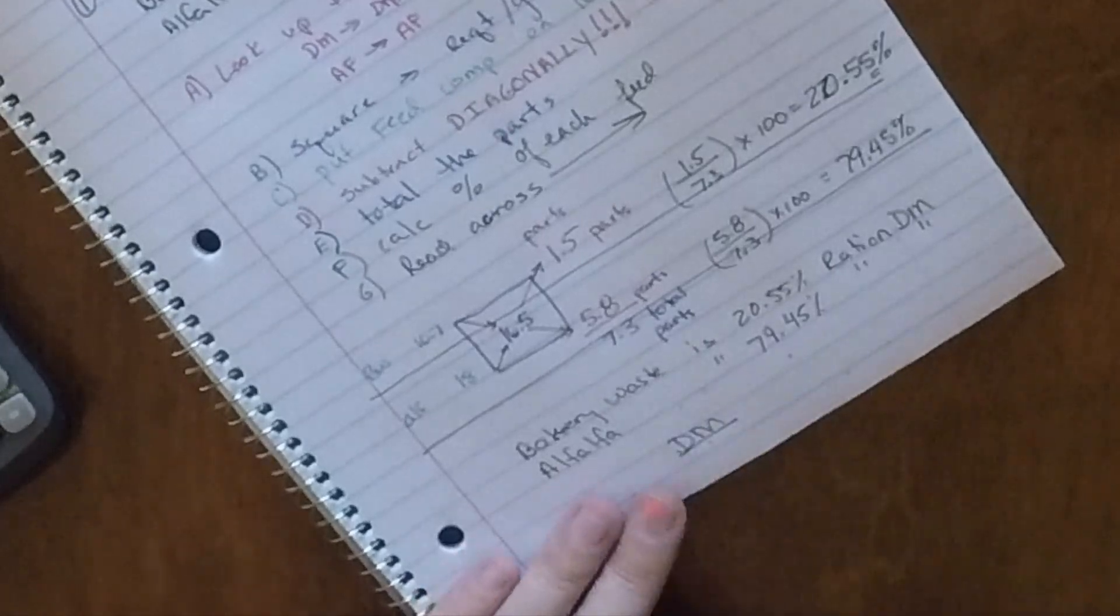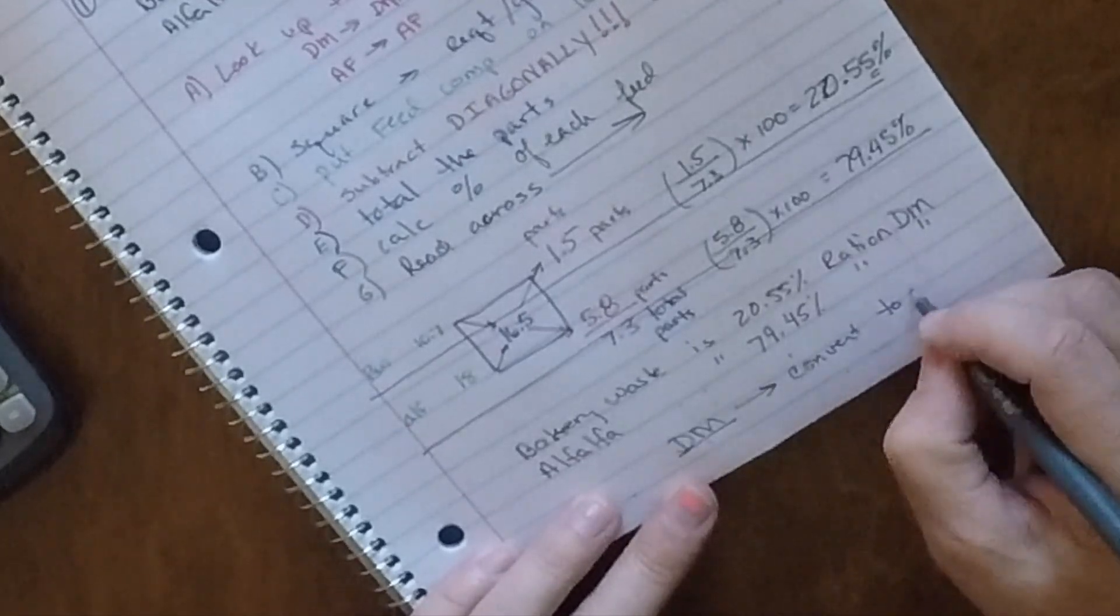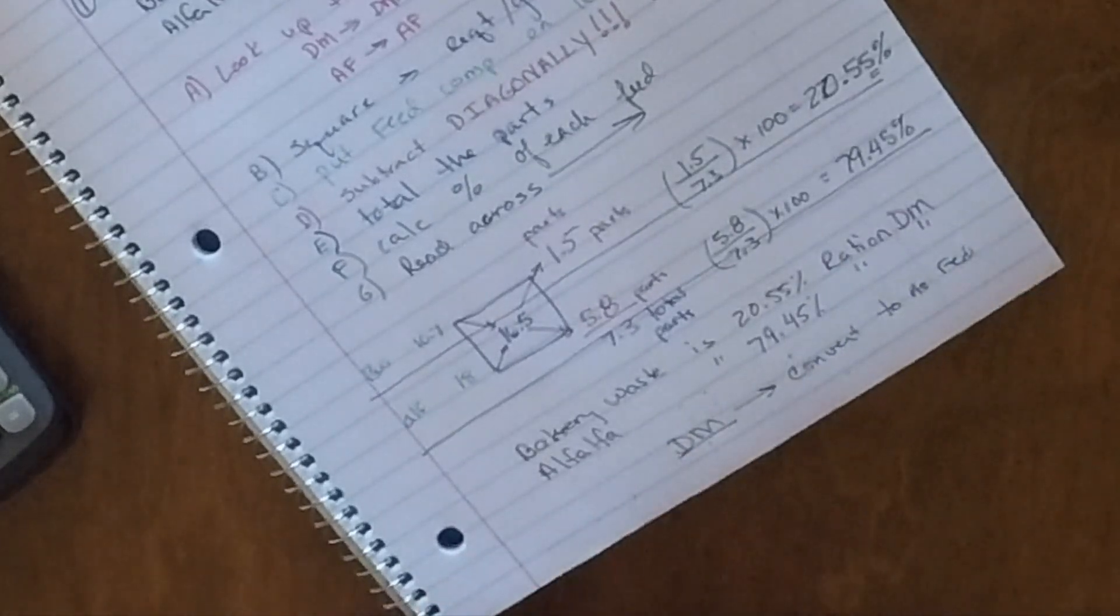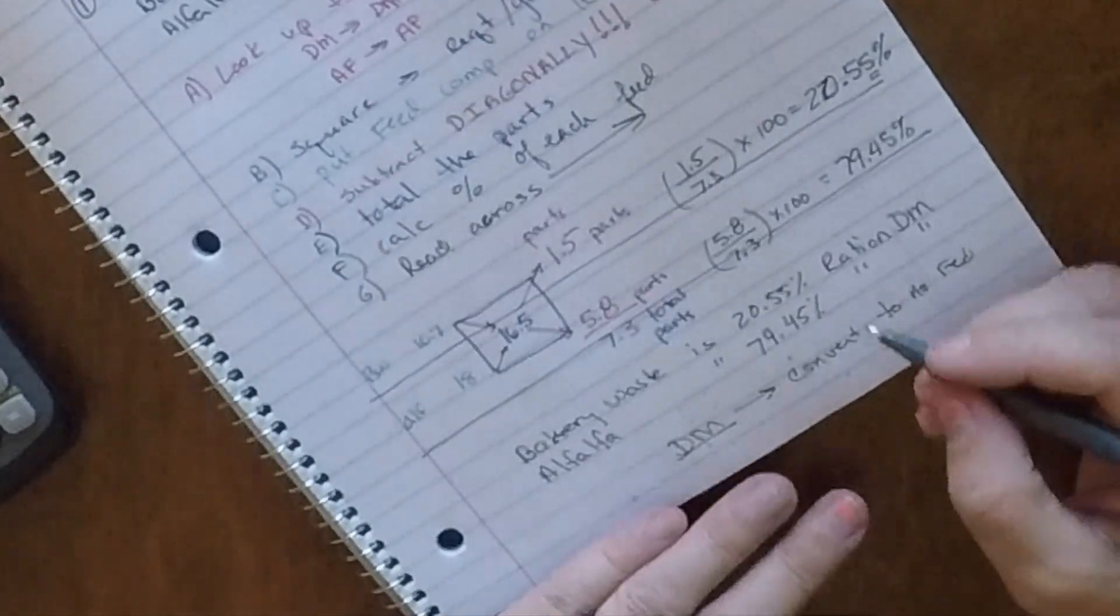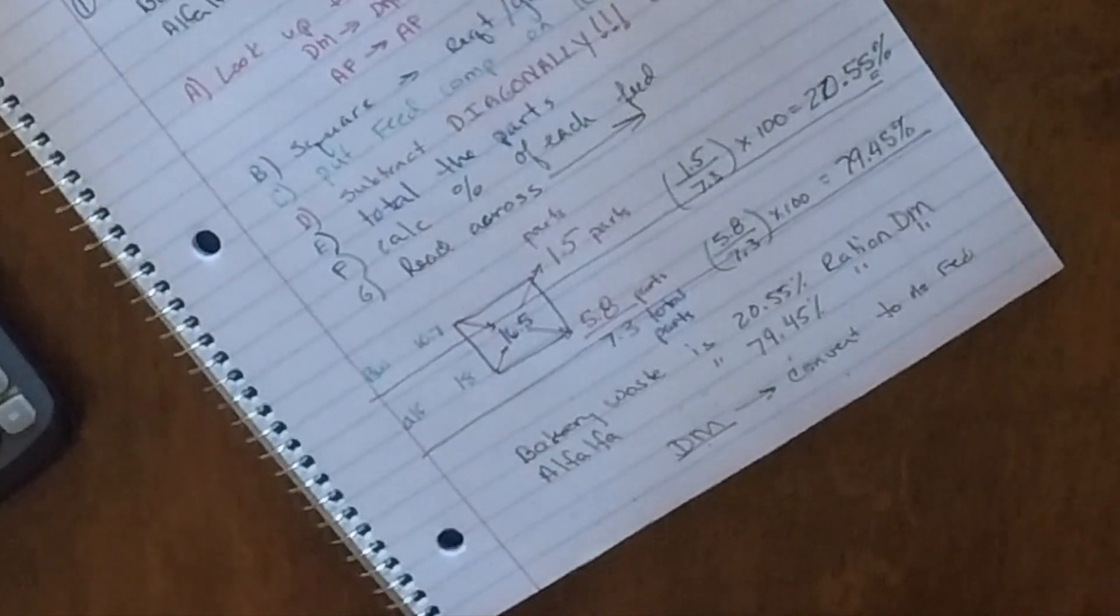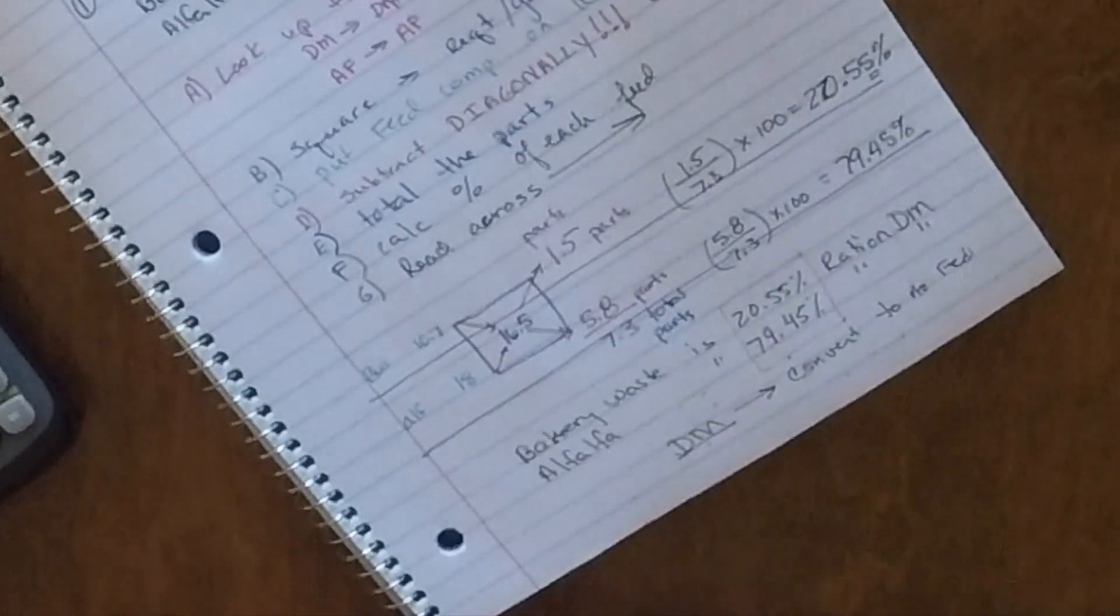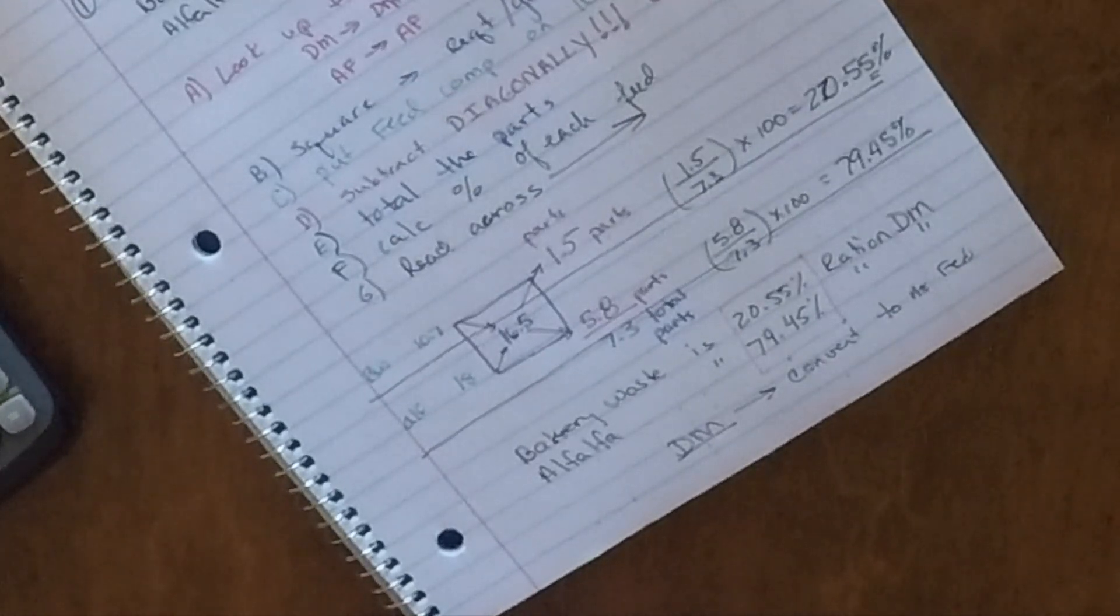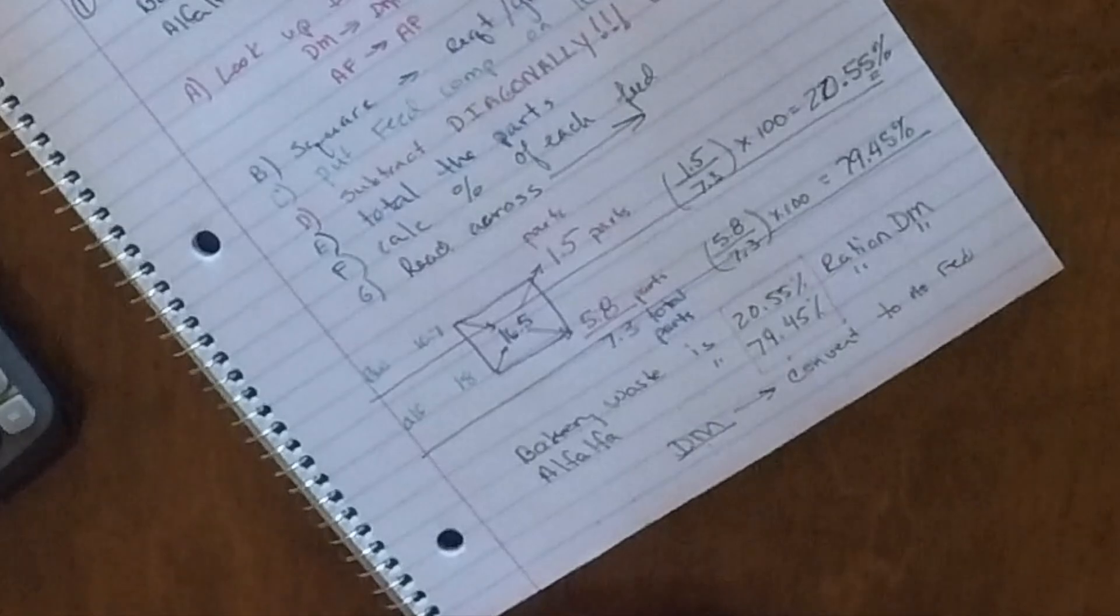Eventually, we are going to convert to as-fed. But we don't have to do that on the first couple of problem sets. We're going to work on that a little bit later in this module. So if you're asking the question of what numbers do I need to turn into Blackboard to get my points so that I can achieve the desired grade I want in this class, these are going to be the numbers you're posting. I'll post the question and ask you what proportion is bakery waste? You would put in 20.55. And that's it to a Pearson square.